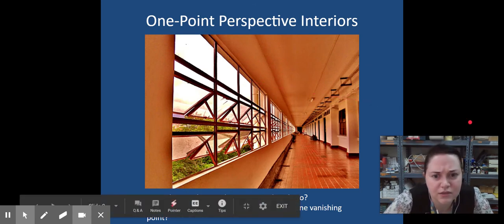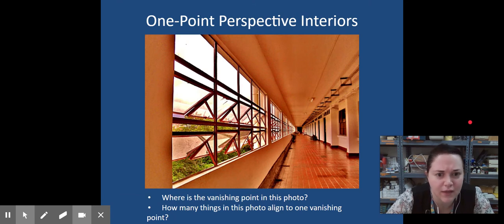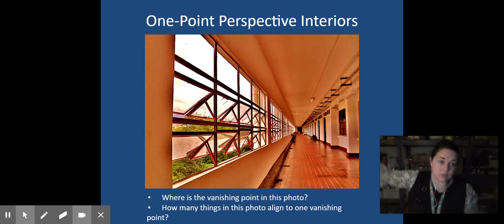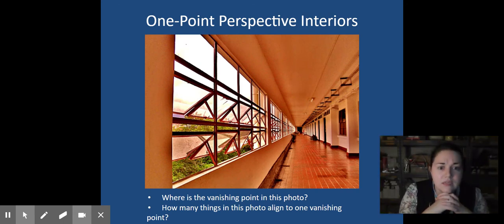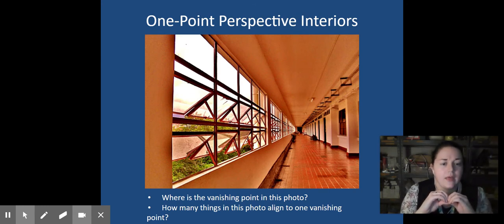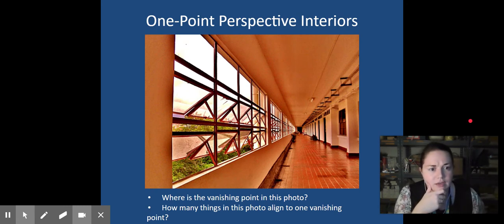How many lines in this drawing, or how many objects I should say, are converging on the vanishing point? First off, where is the vanishing point? If you guessed the back, that door all the way in the background, you would be correct. But how many things align with this vanishing point? Well, the floors, the ceiling, the windows, the door frames. All horizontal lines converge upon the vanishing point. So that is the goal. All horizontal lines must converge on the vanishing point.